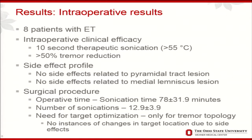We treated eight patients, and of those eight, seven we were successfully able to target the VIM with this method. We had intraoperative clinical efficacy — the metric used was a 10-second sonication at a therapeutic temperature of 55 degrees or more achieving objective 50% tremor reduction. We noticed no side effects related to sonication of the pyramidal tract or lemniscus in the sensory nucleus. Sonication time was 78 minutes, with about 13 sonications. Target optimization was only needed to control medial-lateral positioning for proximal or distal hand tremor, not due to any side effect profiles.